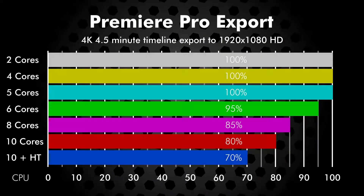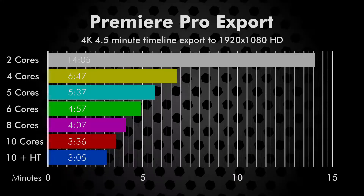This first graph is the amount of CPU usage for export by core count. We can see by this that at least 6 cores is desired, both to prevent processor saturation by Premiere and for a smoother user experience.